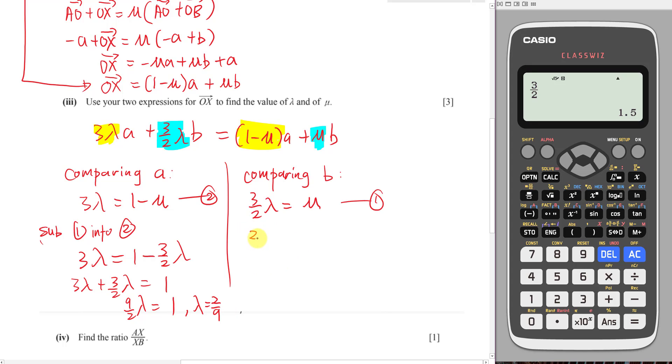Then I will sub my lambda value into here, which is 2 over 9, equals my mu here. 2 and 2 I cut, this one and this one I cut, my mu equals 1 over 3.